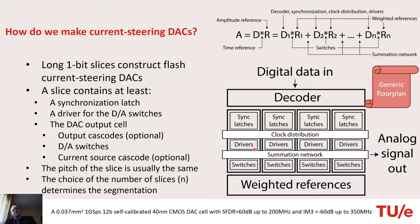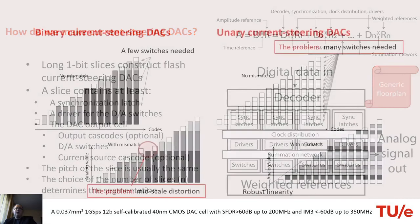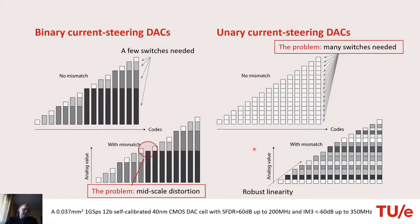The choice of the number of slices determines the segmentation that we will use, and this is a major choice affecting the area, the resources, the efficiency, and the performance of the DAC converter.